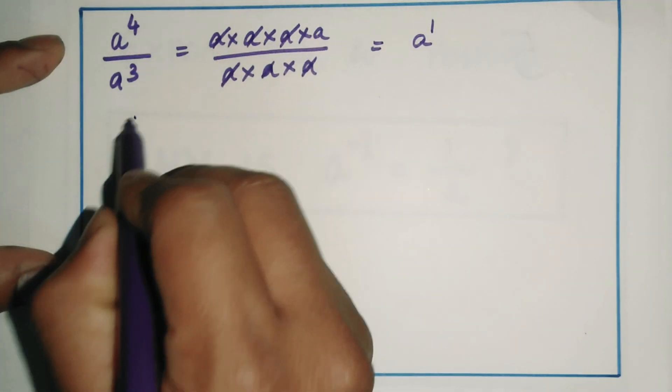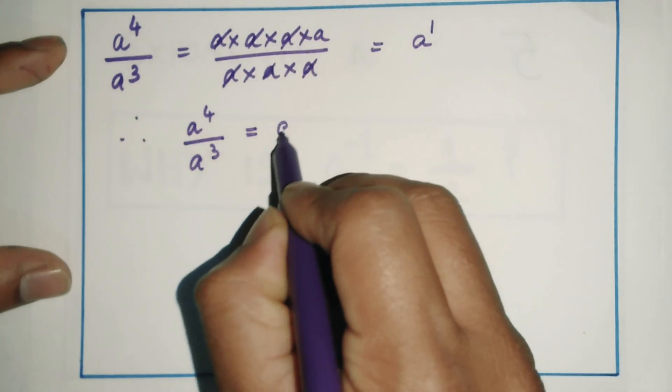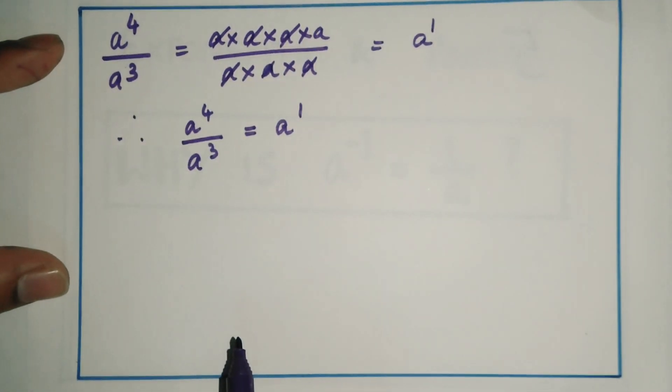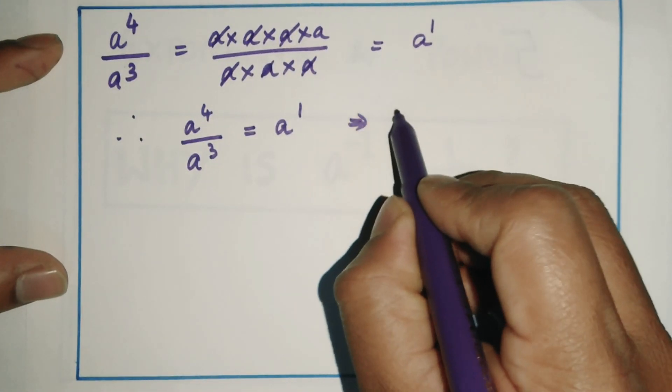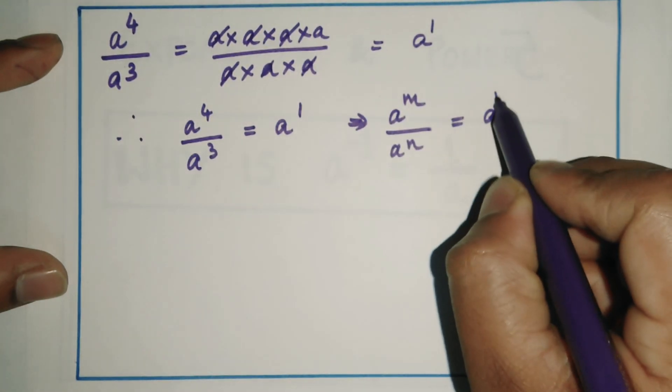Therefore, I can write a^4 upon a^3 equals a^1. This is a^m by a^n, which equals a^(m-n).